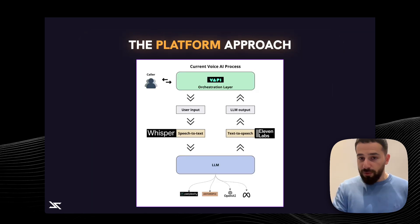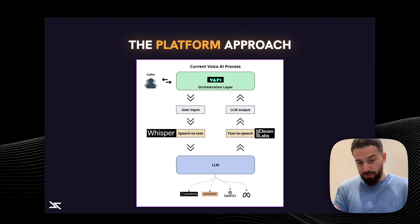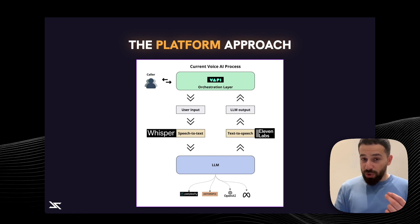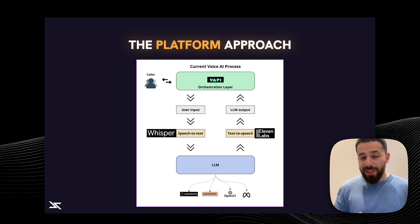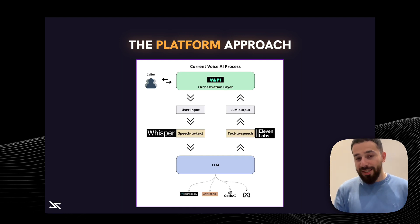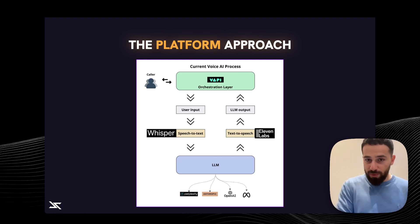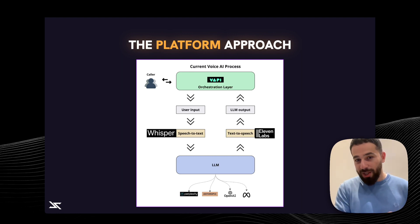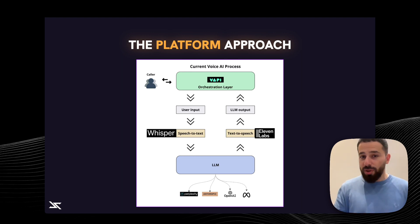If you use the platform approach, what you have to understand is that those platforms orchestrate multiple different AIs together. Take VAPI as an example: when you call a VAPI AI agent, it's going to take your voice and transcribe it into text using one AI. Then it sends the text to another AI — like ChatGPT — which replies with text. It receives text and replies with text. Then there is a third AI, such as ElevenLabs, that takes the text and converts it into speech, which is then sent back to the caller. That's how the whole interaction happens.